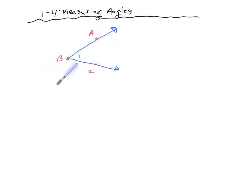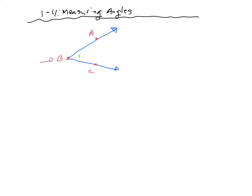Here's your angle. Note that this angle is made up of two rays. This right here is called the vertex. Point B is called the vertex — that's the most important point on your angle. Naming your angle centers around that vertex. Anything in between these two rays is the interior of your angle, and anything outside is the exterior.